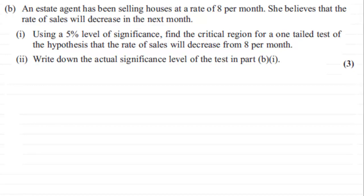and you can check your solution with mine. Okay, welcome back if you had a go. So we've got here an estate agent has been selling houses at a rate of 8 per month, and she believes that the rate of sales would decrease in the next month. Now in part one it says that using a 5% level of significance,